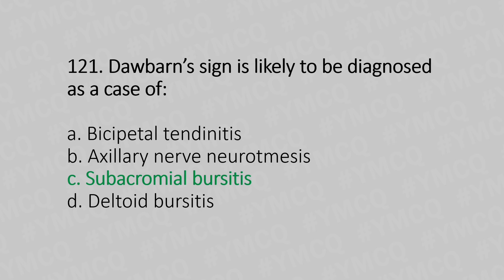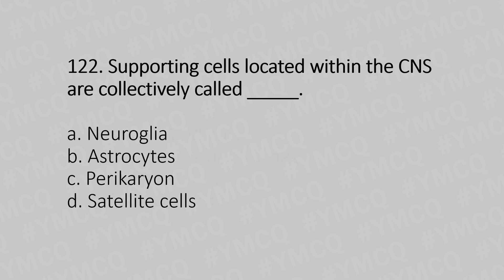Question number 122: Supporting cells located within the CNS are collectively called dash — Option A: neuroglia, Option B: astrocytes, Option C: pericranium, Option D: satellite cells. The answer is Option A, neuroglia.